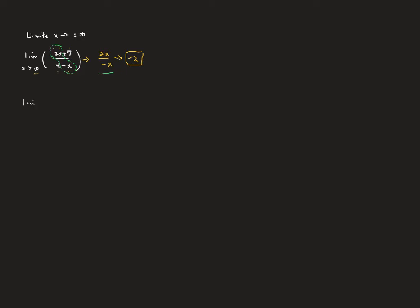When the degree of the numerator is greater than the degree of the denominator, consider the limit as x goes to infinity of (x² + 7) over (5x − 4). The highest powers give x² over 5x, which simplifies to x over 5. As x grows without bound, this grows without bound too. We can say the limit is infinity, or more safely, the limit does not exist.